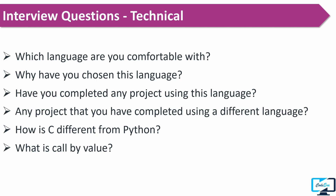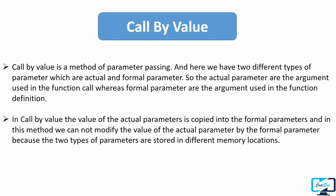The next question was what is call by value, which is a very basic concept of C and C++. You can say call by value is a method of parameter passing with two types of parameters: actual and formal. Actual parameters are arguments used in the function call, formal parameters are used in the function definition. In call by value, we cannot modify the value of the actual parameter via the formal parameter, because the two types of parameters are stored in different locations.